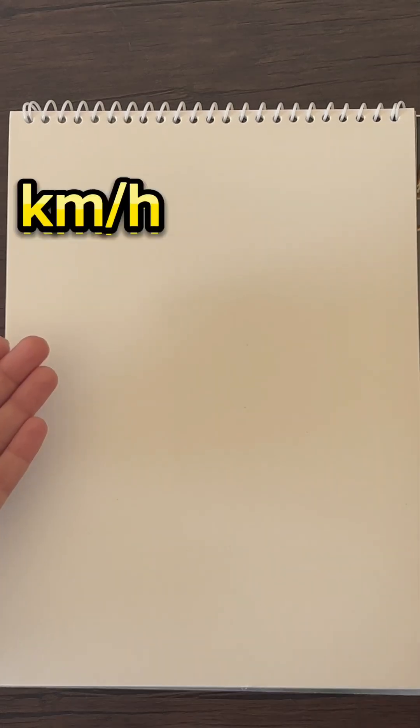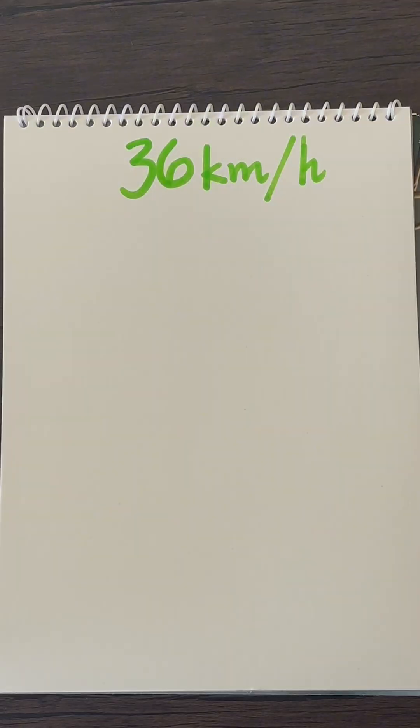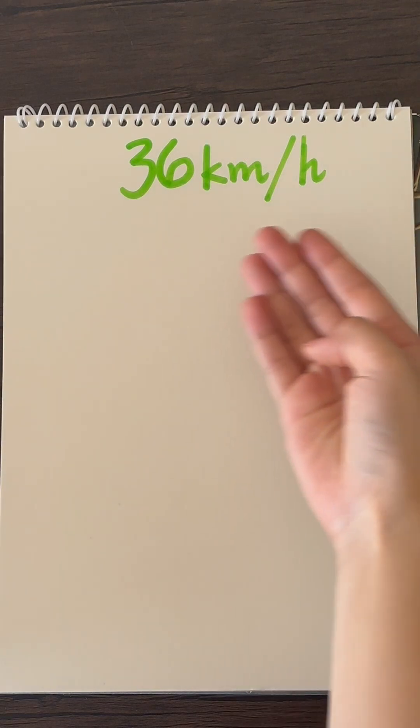You know how to convert from kilometers per hour to meters per second. Let's have a look at this example of 36 kilometers per hour.